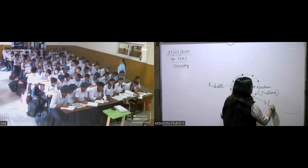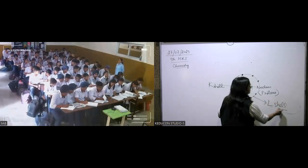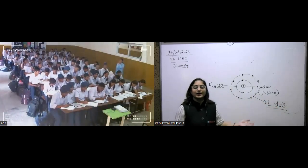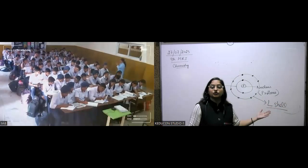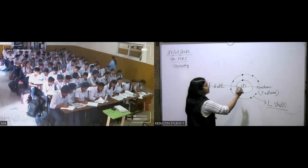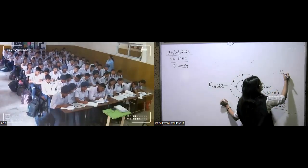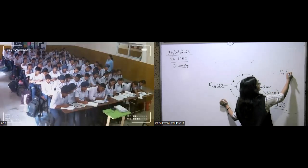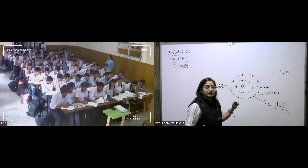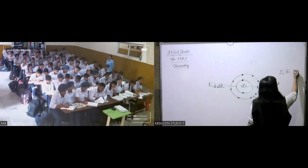The first shell is called the K shell, the second is L, the third is M, the fourth is N. The first shell can hold two electrons, the second can hold eight, and the third can also hold eight.